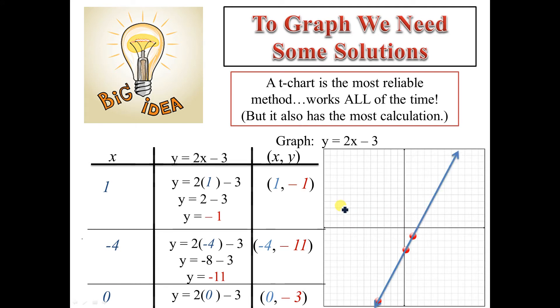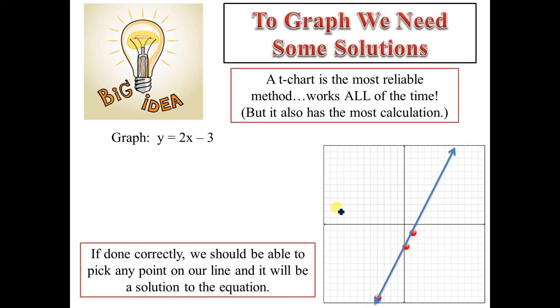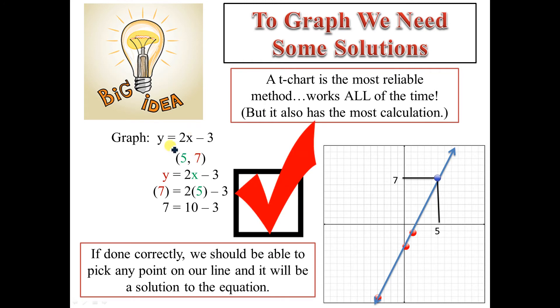So let's go ahead and put these on there. There's my three points, there's my line, and if I did it right, then I should be able to pick another point anywhere on here and find its coordinate. So a little sloppy there, but 5, 7, I should be able to plug in 5 for x and 7 for y, and I should get a true statement. And this one works. So I did graph it right.